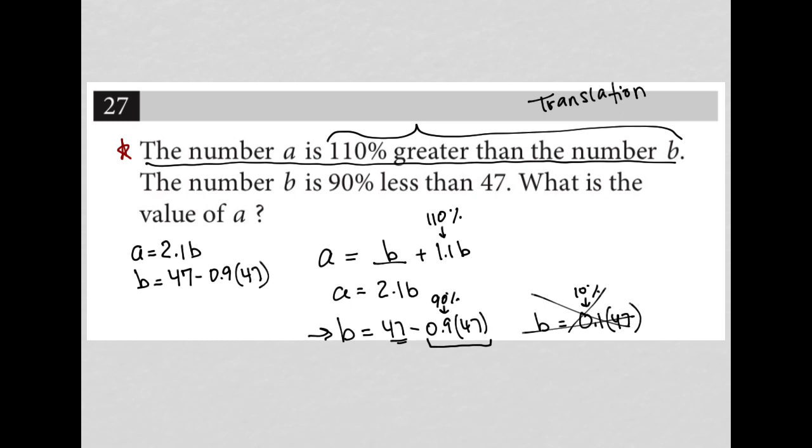So let's do some more math here. 0.9 times 47 in my calculator is 42.3. So it becomes 47 minus 42.3. And then 47 minus 42.3 is equal to 4.7. So B is equal to 4.7.